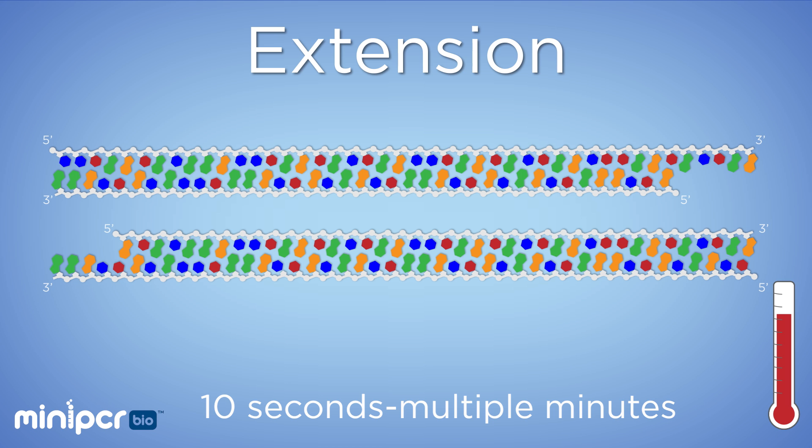If we are copying very short regions, it may only need a few seconds. Extension typically happens around 72 degrees Celsius, the optimal working temperature of the polymerase.